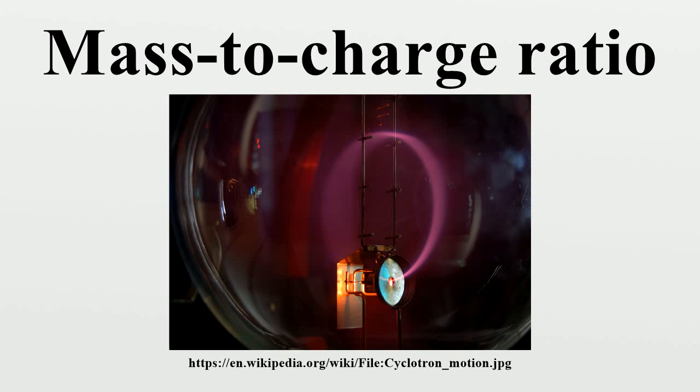In the 19th century, the mass-to-charge ratios of some ions were measured by electrochemical methods. In 1897, the mass-to-charge ratio of the electron was first measured by J.J. Thomson.